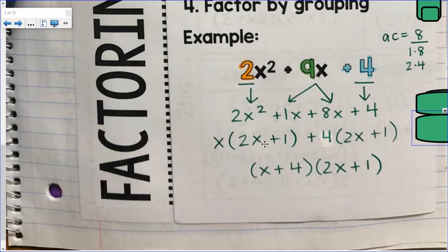x times 2x is 2x². x times 1 is 1x. 4 times 2x is 8x. So, 1x plus 8x gives me 9x. And 4 times 1 is 4.